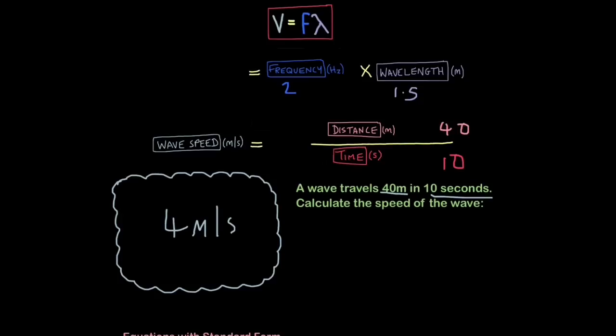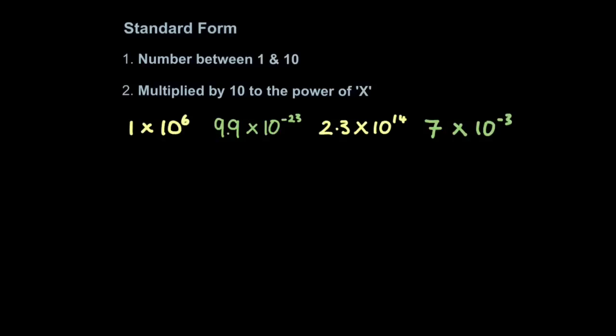Okay, but this is relatively easy. Let's step it up a bit onto the higher level. So now we're going to look at equations using standard form. When using standard form, the first number must be between 1 and 10, and then it's always multiplied by 10 to the power of another number, be it a positive number or a negative number.